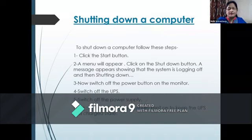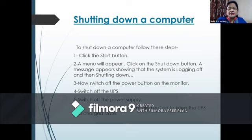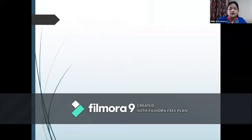Shutting down a computer. To shut down a computer, follow these steps. First, click the Start button. Then a menu will appear — click on the Shutdown button. A message appears showing that the system is logging off and then shutting down. Third, switch off the power button on the monitor. Number 4, switch off the UPS. Number 5, switch off the power supply. Note: the power supply is usually kept on to keep the UPS in a charged state. This is the picture which shows shutting down of the computer.